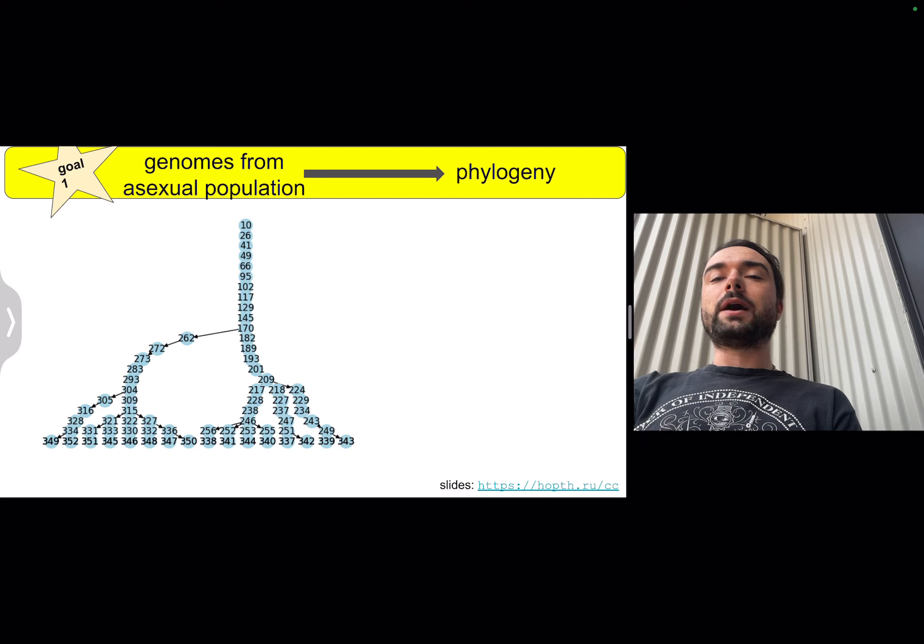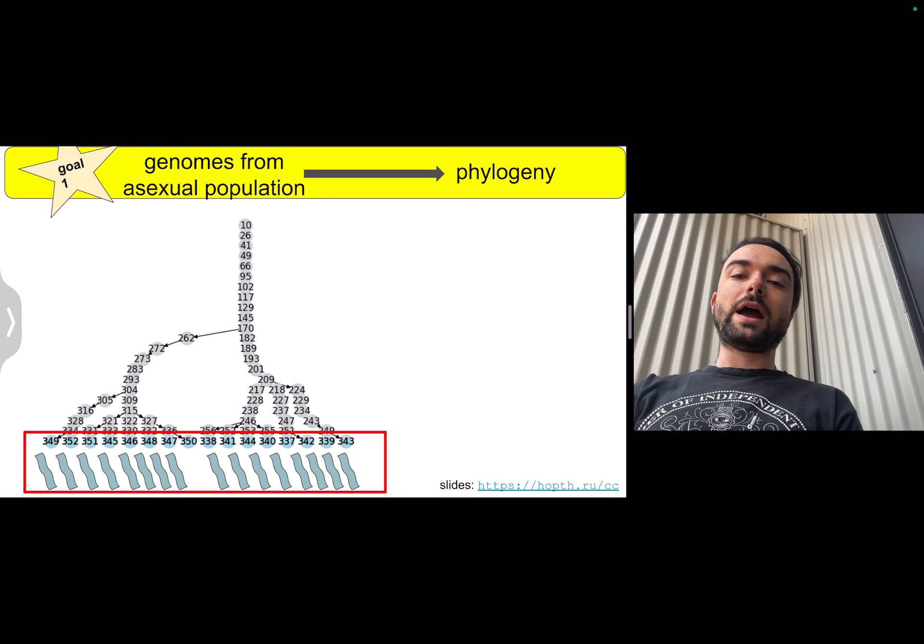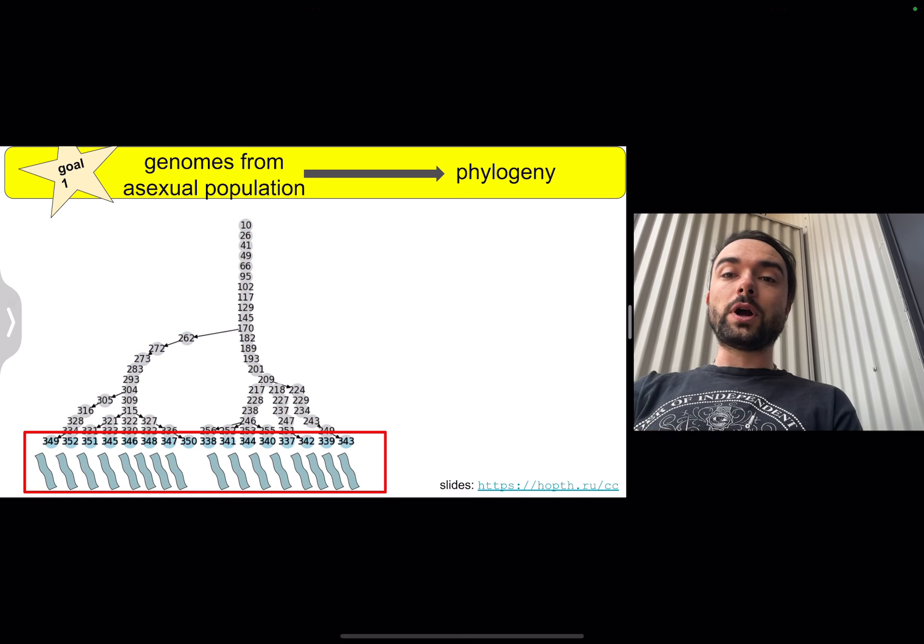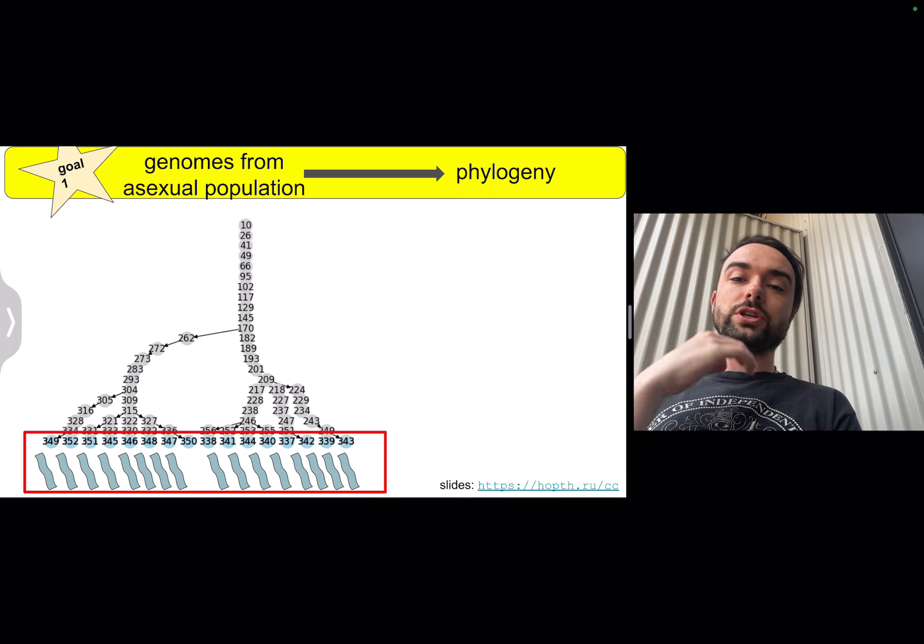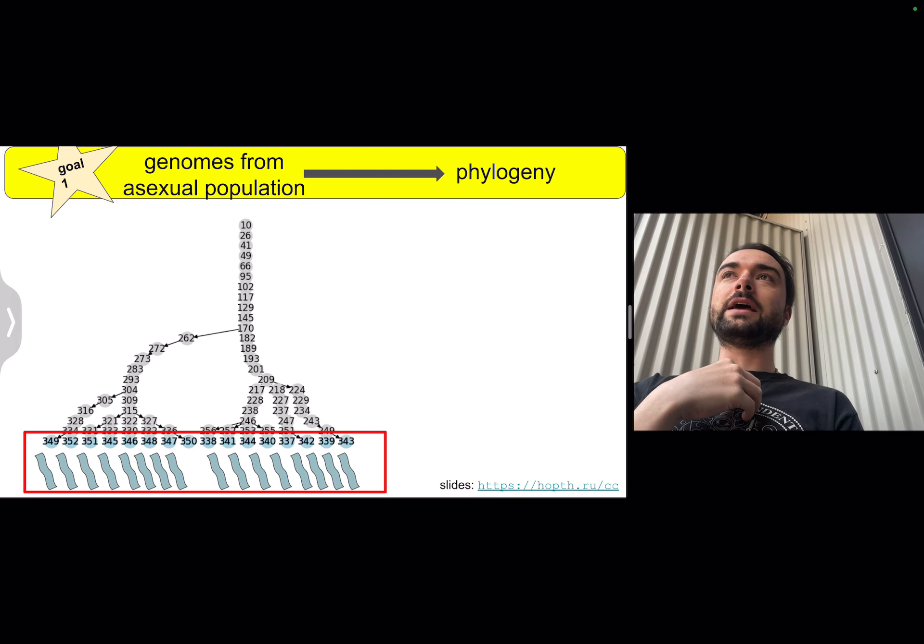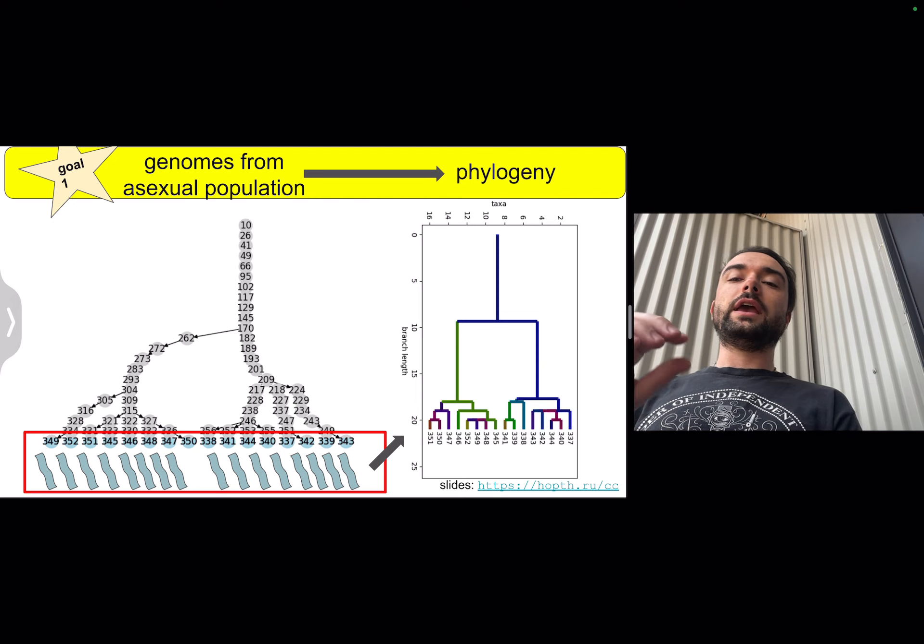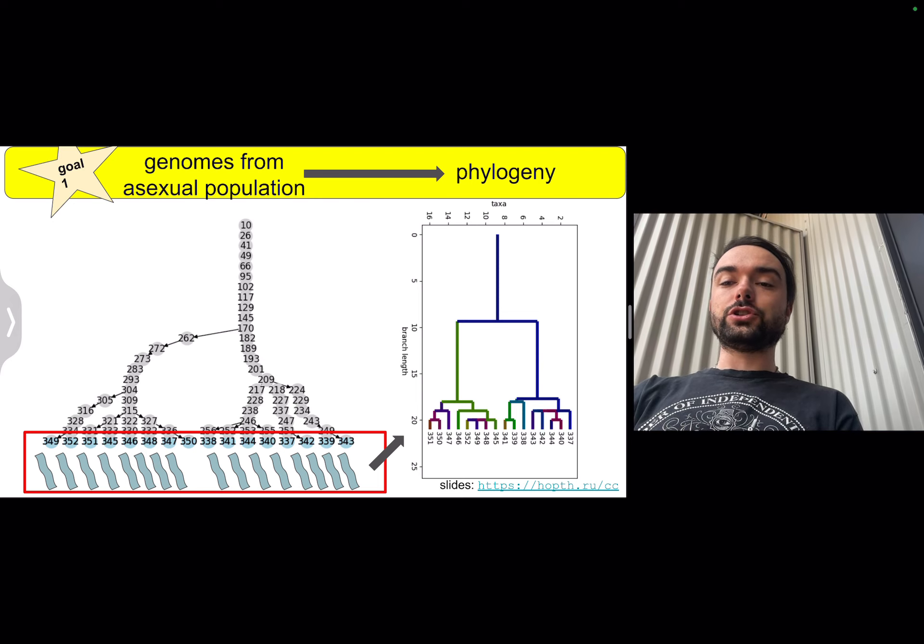Let's start by talking about how we can perform a reconstruction on an asexual population. The goal here is to grab the set of genomes that are extant at the end of a run so we don't have access to any of the information or genomes that preceded them. The goal is to do some inference and estimate their phylogenetic relationship.